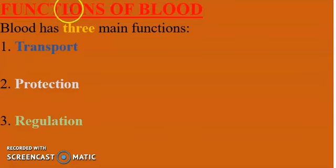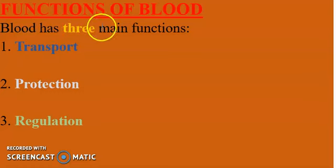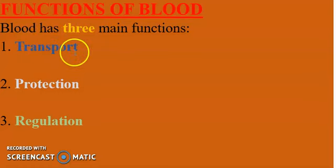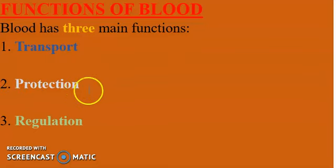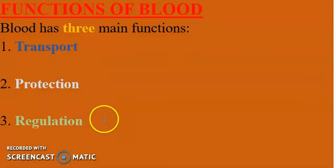Now let's start with the functions of blood. Blood has three main functions. These are: one, transport; two, protection; and three, regulation. I'm going to take these three main functions and explain them in detail.